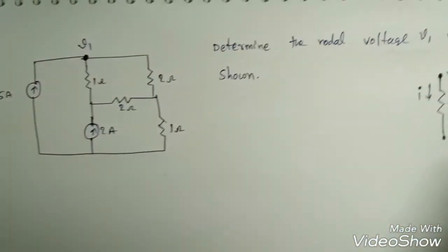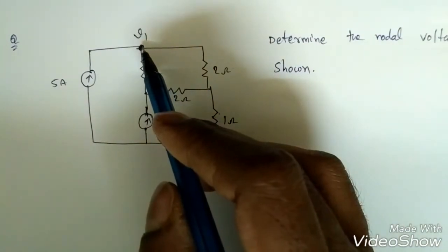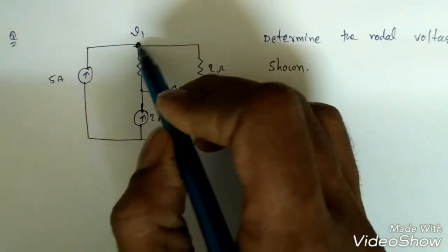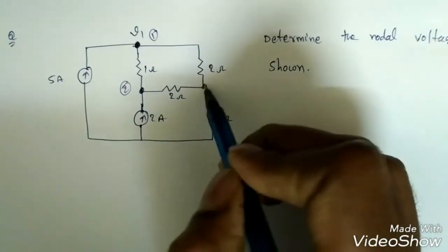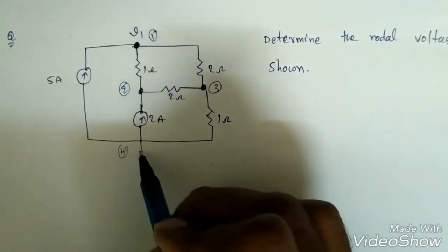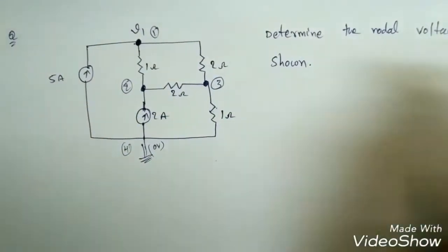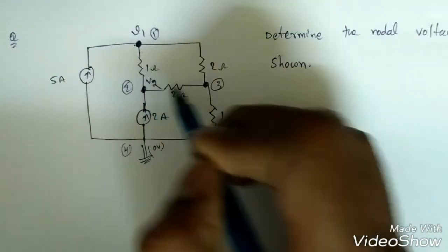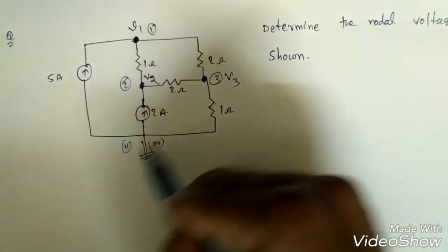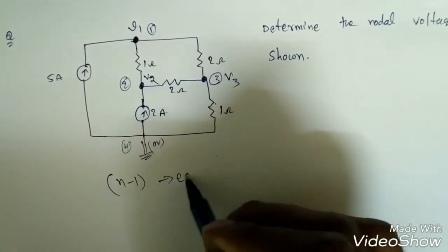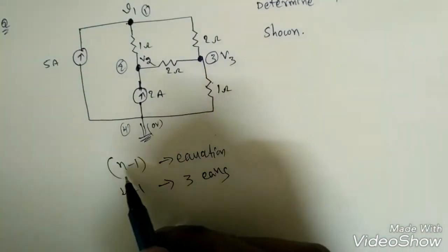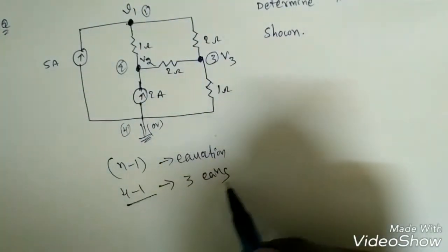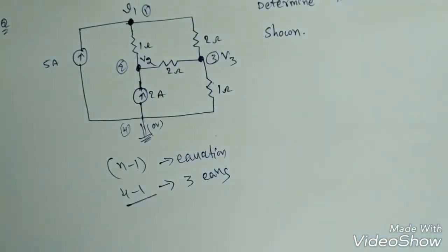Now we will see one example. The question asks us to determine the nodal voltage V1. First we need to identify the number of nodes. This is node 1 with voltage V1, this is node 2, node 3, and node 4 which we make the reference at 0 volts. So we have V1, V2, and V3 as unknowns. With 4 nodes, n minus 1 gives 3 equations required to solve V1, V2, and V3.